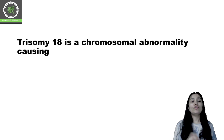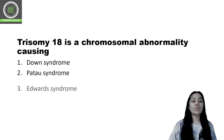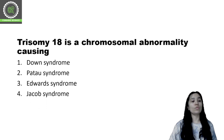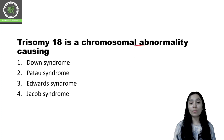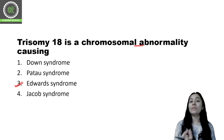Question number 3: Trisomy 18 is a chromosomal abnormality causing which disorder? Options are: Down syndrome, Patau syndrome, Edward syndrome, and Jacobs syndrome. Trisomy 18 is a chromosomal abnormality and it causes Edward syndrome — option 3 is your correct answer. Edward syndrome is also known as trisomy 18.